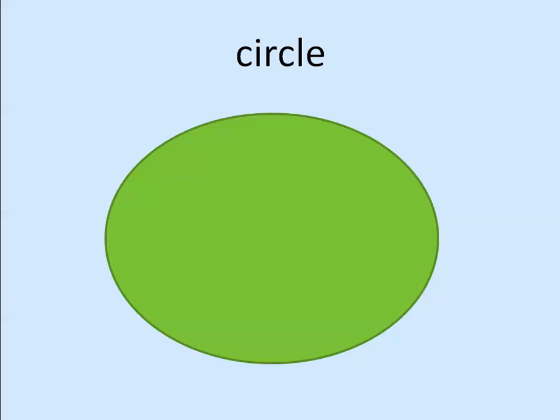Okay, this is a circle. Say: circle. Very good! Let's sing the song for the circle: 'It goes round and round, no end can be found. It goes round and round, no end can be found. It's a circle!' Say: circle. Very good!